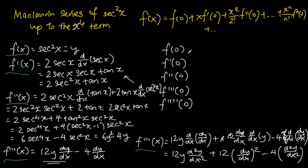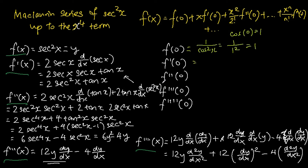Now we need to evaluate each function at x equals zero. For f(0), secant squared x equals 1 over cosine squared x, and since cosine(0) equals 1, f(0) equals 1 over 1 squared, which is 1. For f prime(0), substituting x equals zero gives 2 times 1 squared times tangent(0), and since tangent(0) equals zero, f prime(0) is zero.